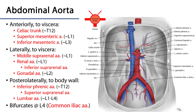The abdominal aorta then continues on and bifurcates at approximately the L4 level into the common iliac arteries. There's also a median sacral artery that leaves there. The common iliac arteries supply the abdominal wall, pelvis, and lower limbs with blood.